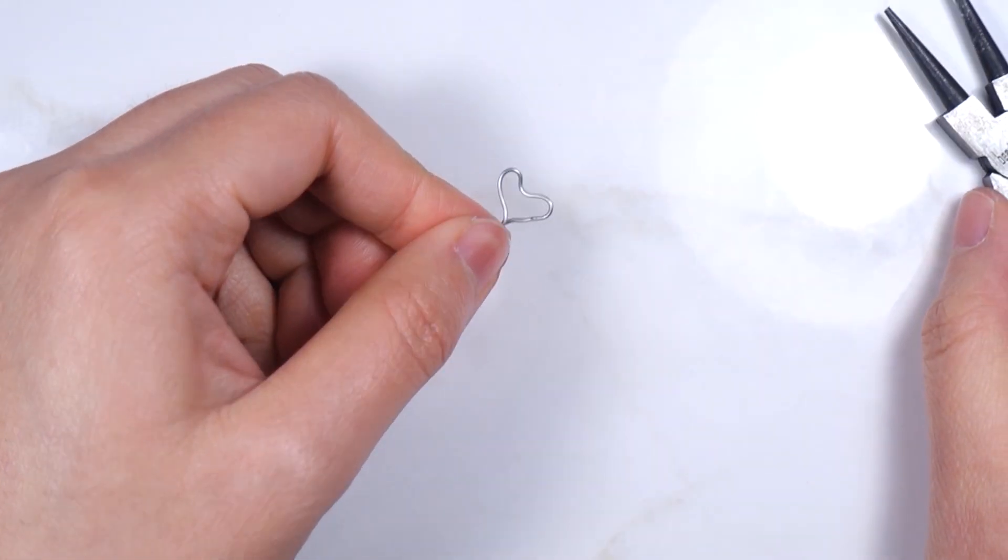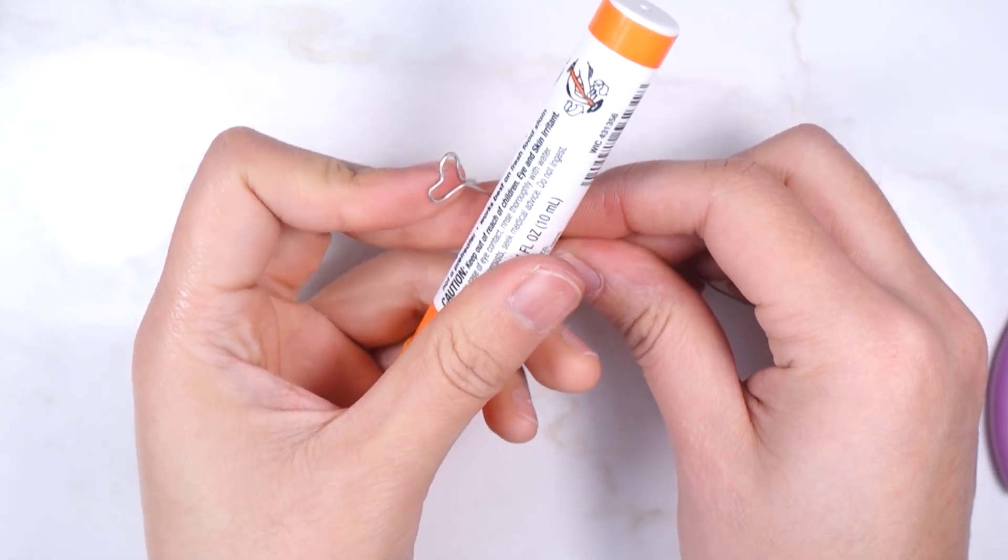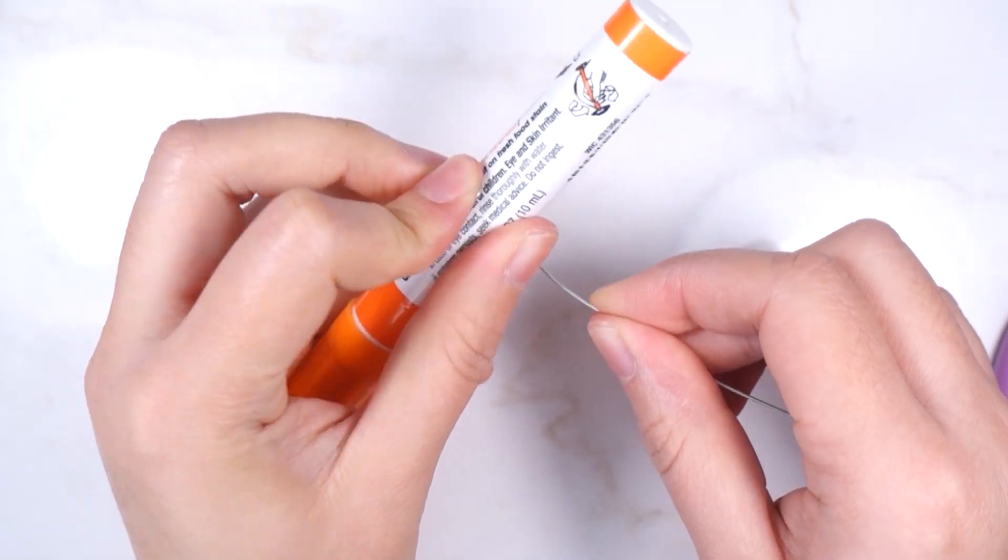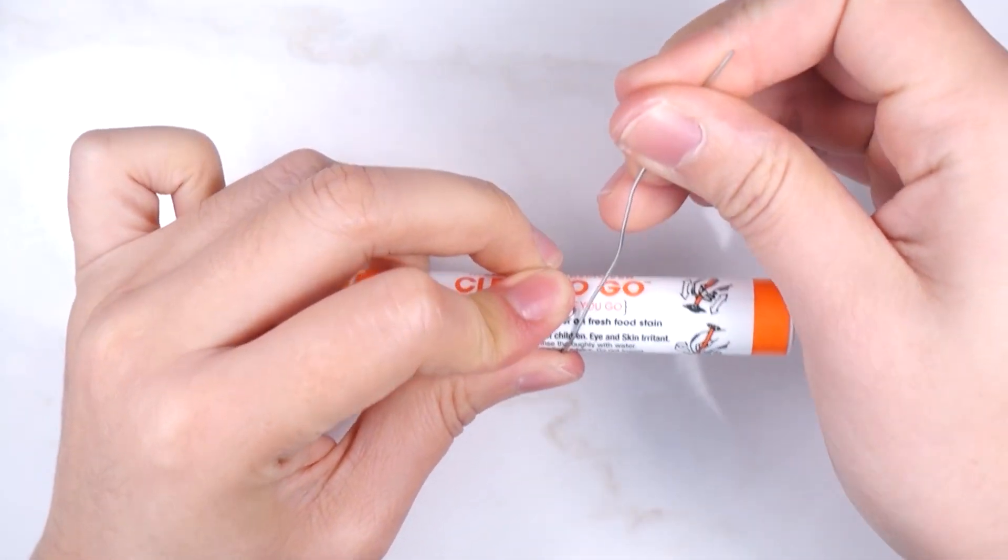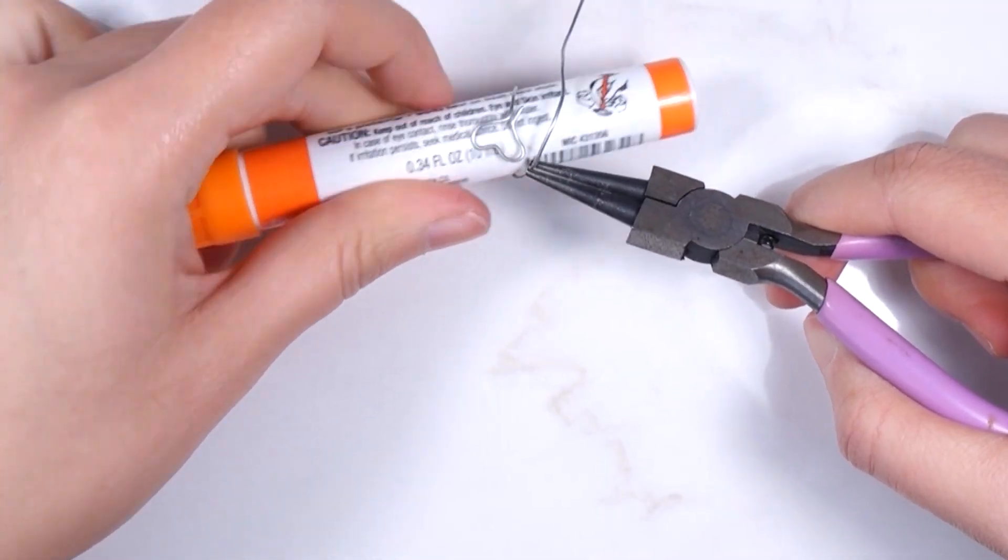Adjust the shape if you need to, then wrap around a cylinder object. The second part will be on top of the first heart, so mark where the second one will be with a plier. Then slide the ring out.